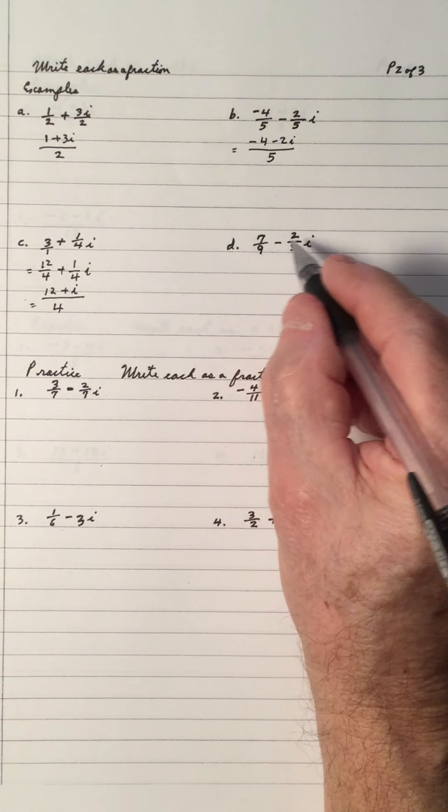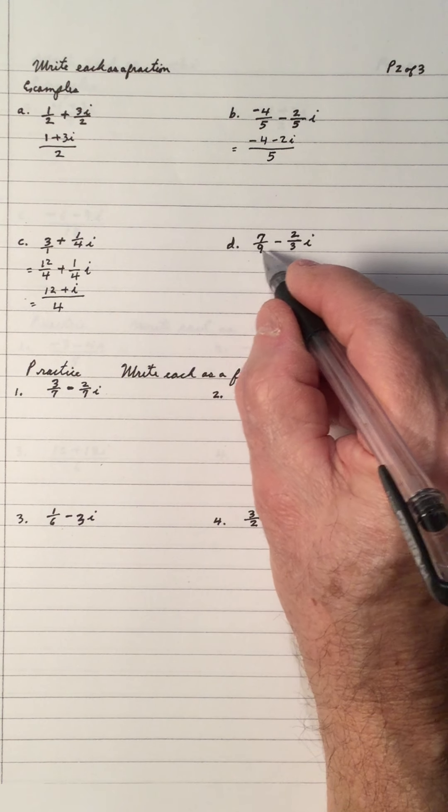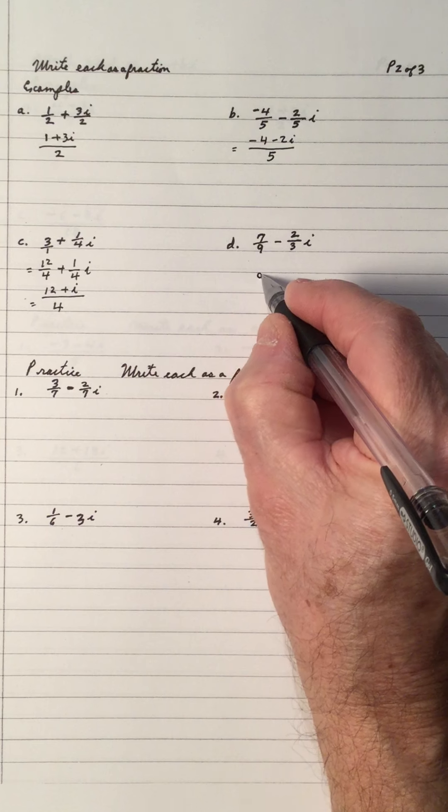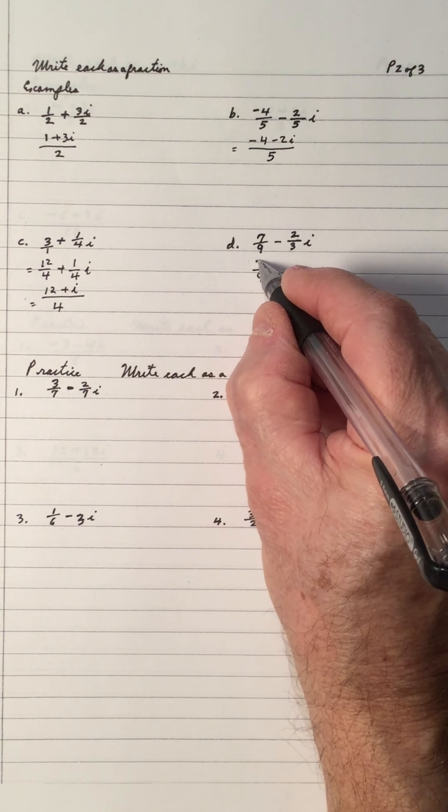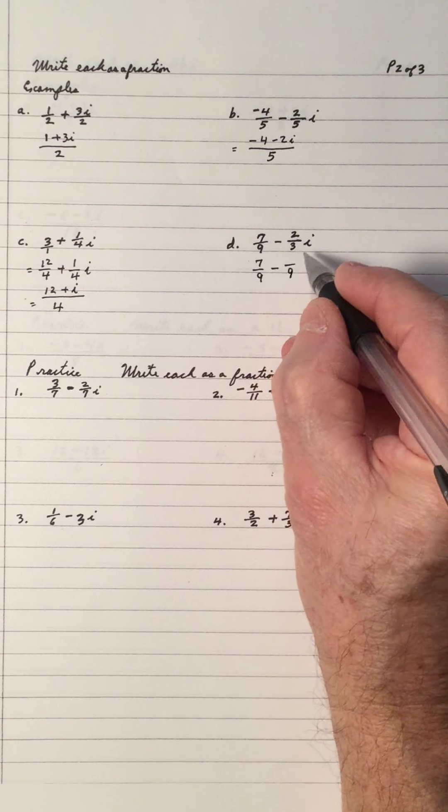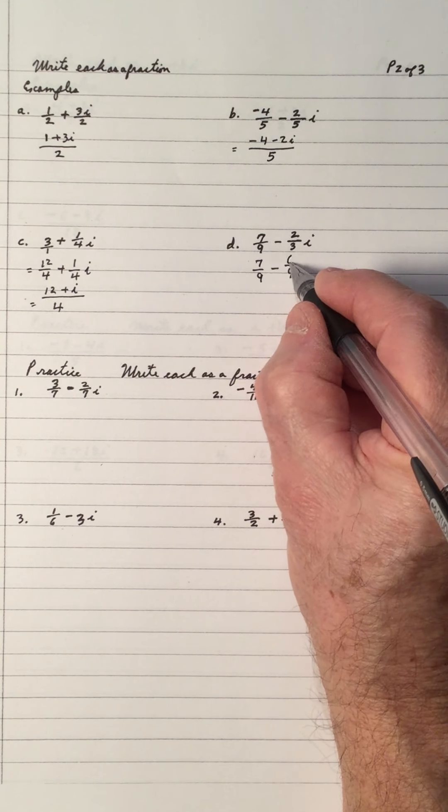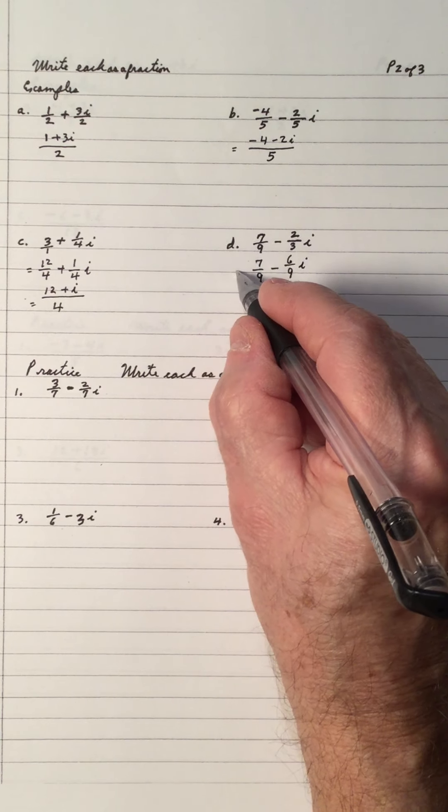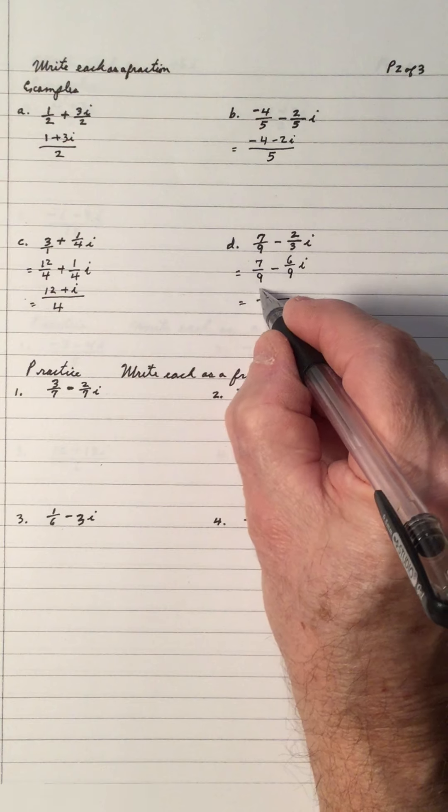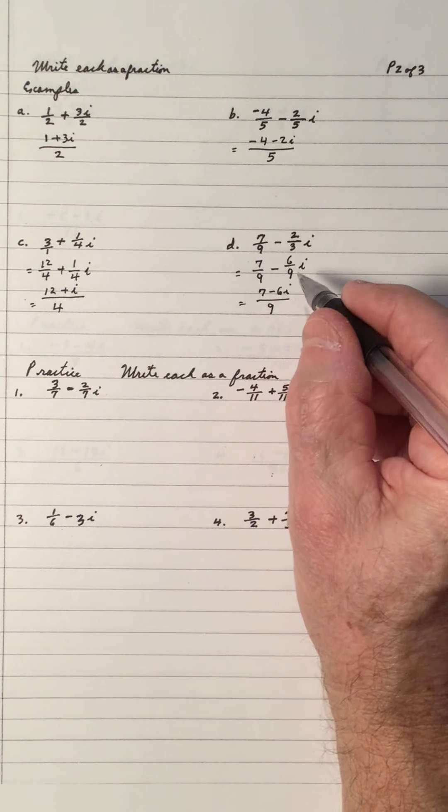And D, we're going to put these together as one fraction. Common denominator for 9 and 3 is 9. 7 over 9 stays the same. 3 divided into 9 is 3. 2 times 3 is 6. And that gives us, common denominator is 9. So, we get 7 subtract 6i. One fraction.